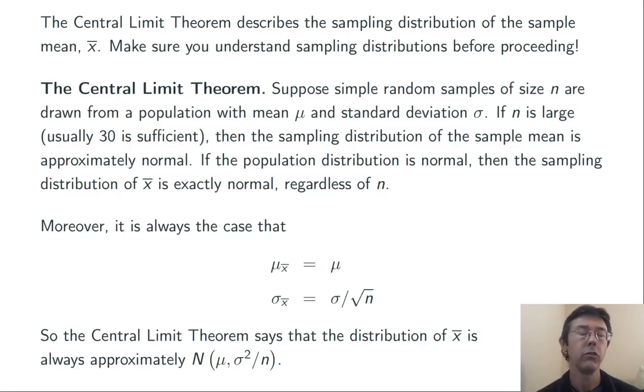Mentally, you should be imagining taking many, many different samples from this population, each of the same size, and taking a sample mean of each one. Sometimes those sample means will be a little higher, sometimes they'll be a little lower, but on average they'll be exactly the mean of the population. And the spread of those sample means about that mean is going to be approximately bell-shaped, with a standard deviation that is going to be related to but less than the standard deviation of the population.